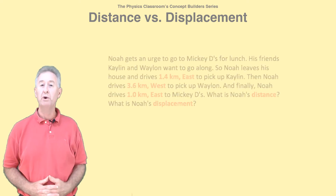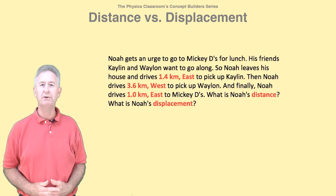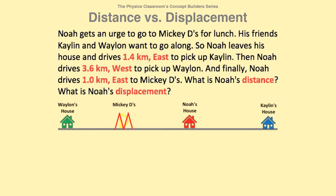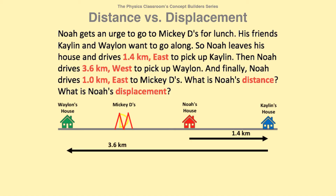Allow me to walk you through a more difficult example. Noah gets an urge to go to Mickey D's for lunch. His friends Kaylin and Waylon want to go along. So Noah leaves his house and drives 1.4 kilometers east to pick up Kaylin. Then Noah drives 3.6 kilometers west to pick up Waylon. Finally, Noah drives 1.0 kilometers east to Mickey D's. What is Noah's distance? What is Noah's displacement?